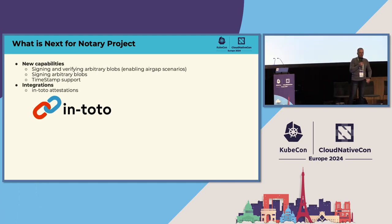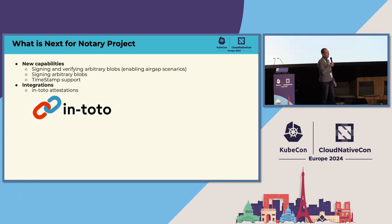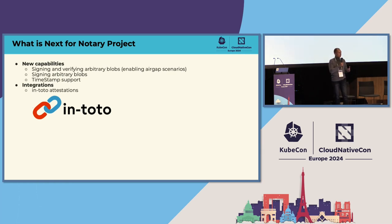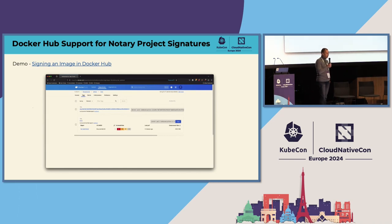We are also working on timestamp protocol support, which will be built into Notation core — meaning timestamp support doesn't need to be implemented in the plugins. One of the big things we're working on is integration with attestations: we're engaging with the in-toto community and looking to add attestation signing into Notation, and also working on some standard attestations we believe will be important for the software supply chain. We have one minute and I think I can sneak in one more demo — with Docker Hub. So far we've been doing demos only with GHCR, but recently, thanks to the efforts at Docker, we can now push Notation signatures into Docker Hub.